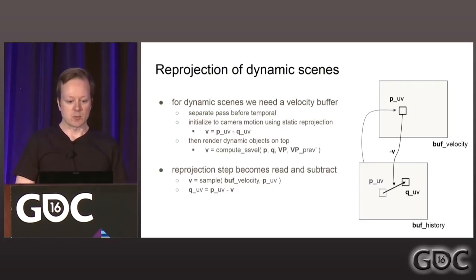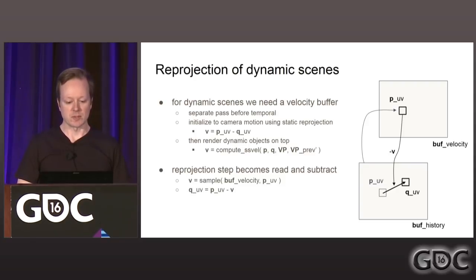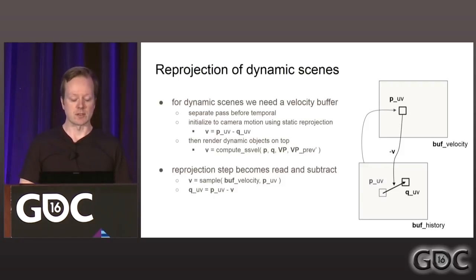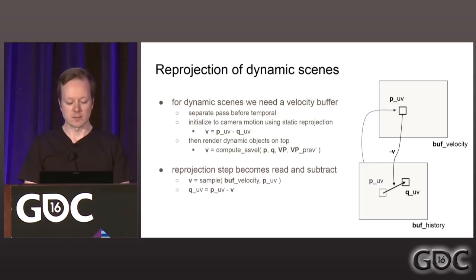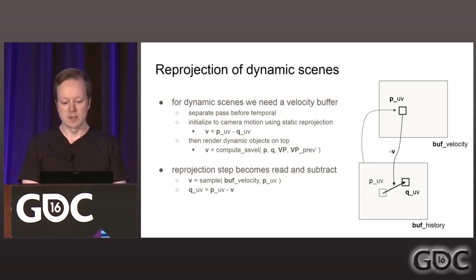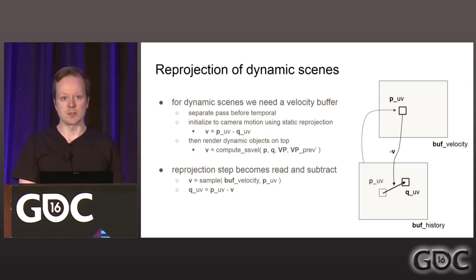For dynamic scenes it's a little more complicated. We cannot rely solely on the depth buffer, so we use a velocity buffer. We generate this in a separate pass before the temporal pass, and initialize it to camera motion vectors using the same reprojection approach. Then we render dynamic objects on top with a depth bias test. Once we have a velocity buffer, reprojection becomes a read and a subtract in the temporal pass — we look up the velocity at the current fragment and step negatively to obtain where we should sample our history buffer.